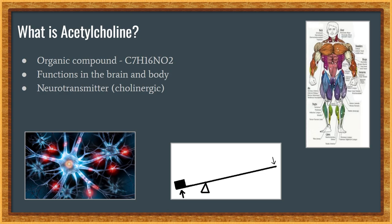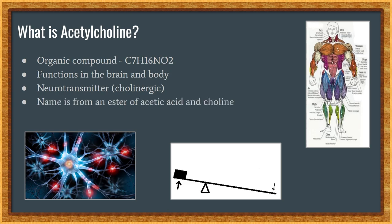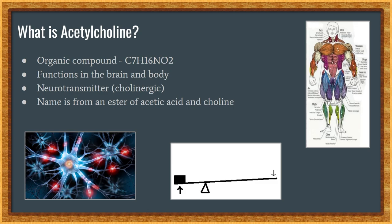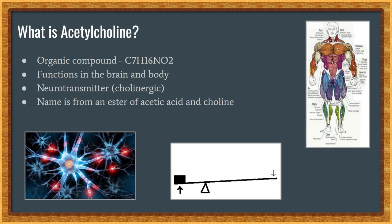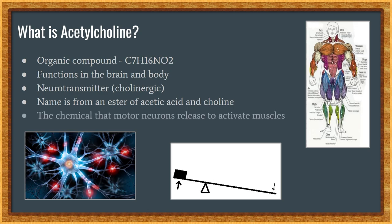Acetylcholine acts as a neurotransmitter and its name is derived from its chemical structure. It is an ester of acetic acid and choline. Parts of the body that use or are affected by acetylcholine are referred to as cholinergic.